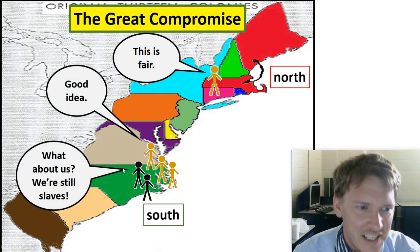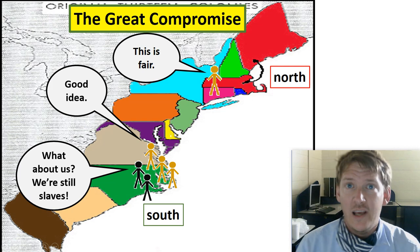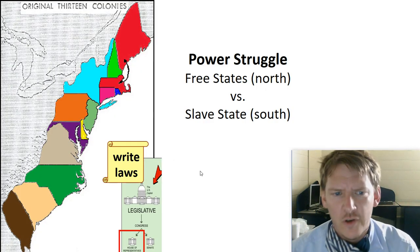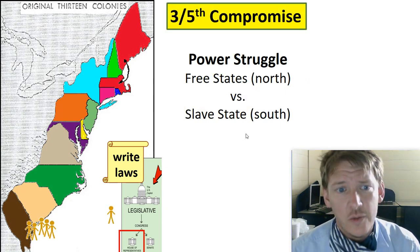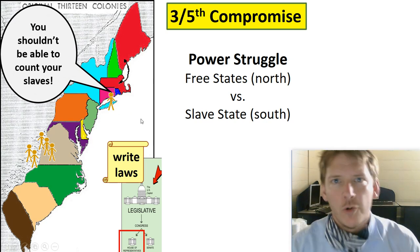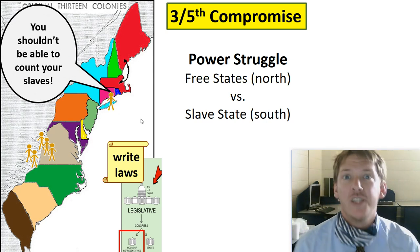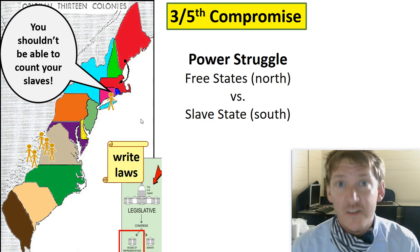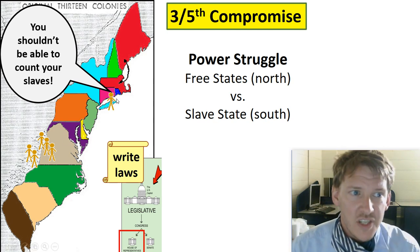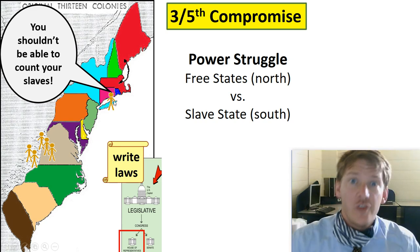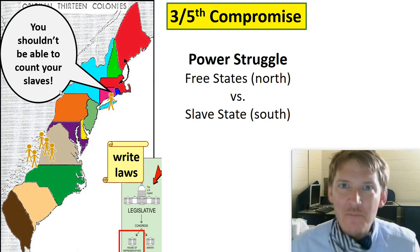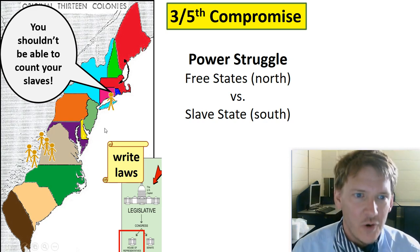Now, what about the slaves? We're not freeing the slaves — as sad as that sounds. Power struggle number two: free states versus slave states. This is the Three-Fifths Compromise. You shouldn't be able to count your slaves towards population. More population means more representatives in government, and more representatives means more laws that favor your state. So northern states without large slave populations felt it wasn't fair to count slaves.